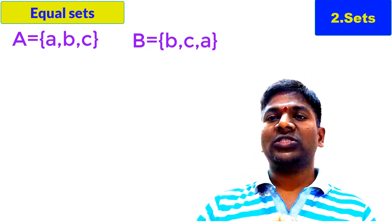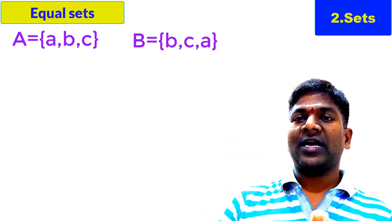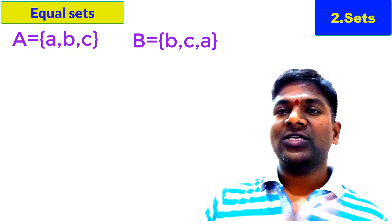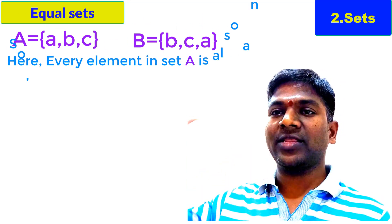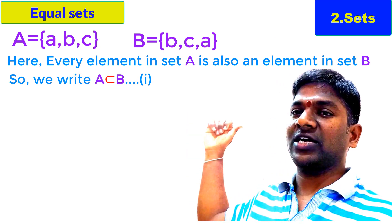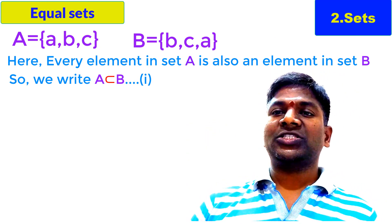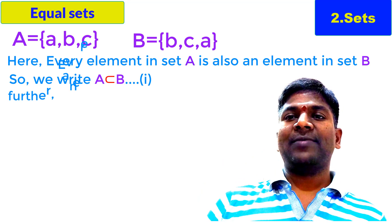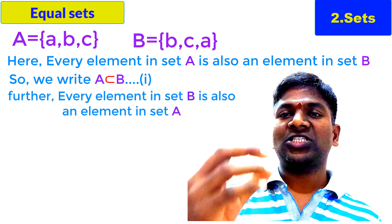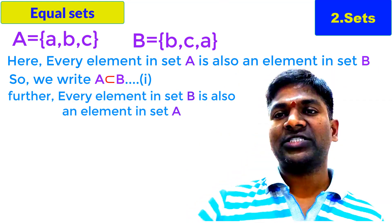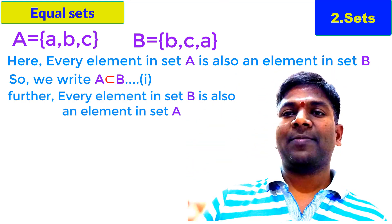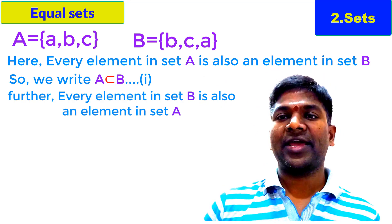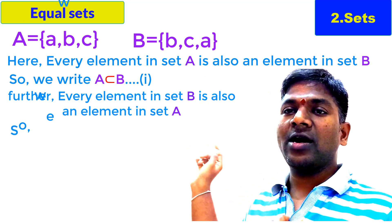Now observe these two sets. First, set A consists of A, B, C. Are these elements in set B? Yes, clearly. So we write A subset B, as shown on the screen. Let us take it as the first condition. Next, see whether B subset A or not. All the elements of B are in A. The B set consists of element B, which is also in set A. The B set consists of element C, which is also in set A. The B set consists of element A, which is also in set A. Clearly, all the elements of B are in A, so B subset A. This is the second condition.